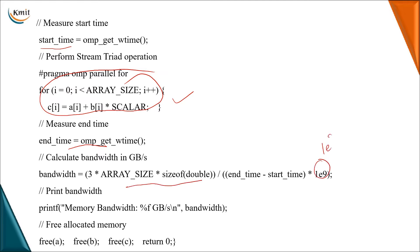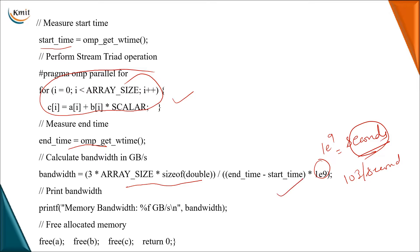The bandwidth formula uses 1e9 in scientific notation to convert time into seconds, giving bandwidth in units like gigabytes per second — for example, 10 or 20 GB/s. We convert the start and end time difference into seconds. Since we used memory allocation functions, we also free up the allocated memory. This shows the bandwidth required for the parallel triad operation.